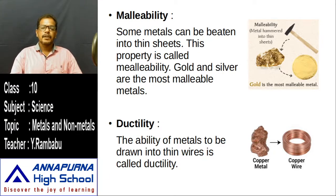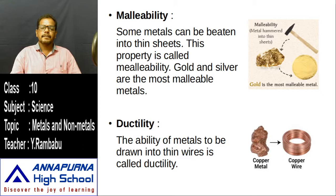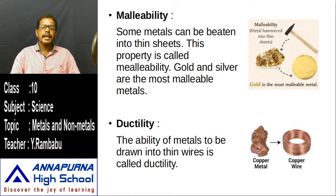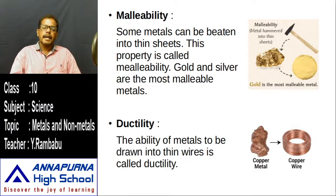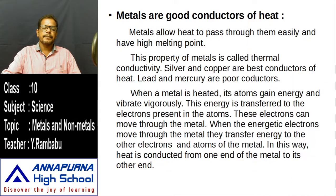For example, just one gram of gold can be drawn into a wire several kilometers long. That is why gold is used for ornaments — due to its malleability and ductility, a small mass of gold can be made into large ornaments in the form of thin wires or thin sheets with different designs.